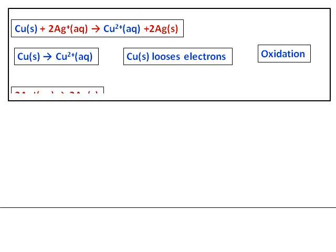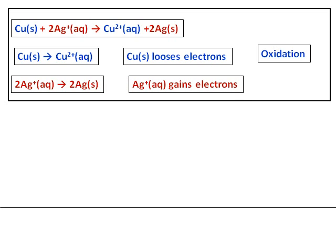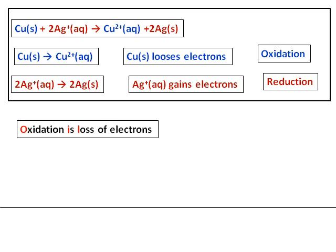The other part of the reaction is Ag+ getting converted into Ag. In this case, Ag+ has gained one electron and any time the process of gaining electrons, we call it as reduction. How do you remember it?